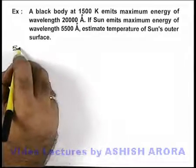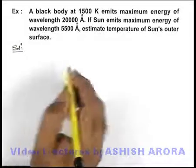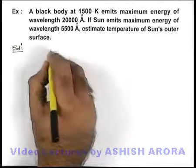The outer surface is the one from which the Sun is emitting its energy. So we can simply use Wien's displacement law.